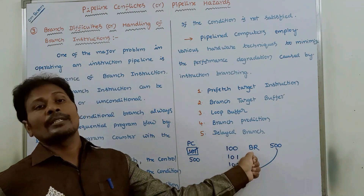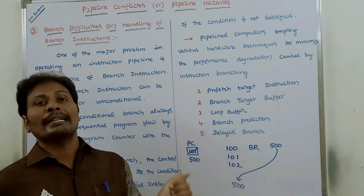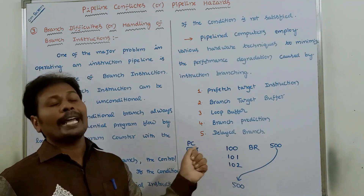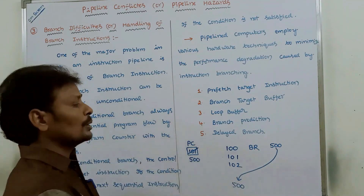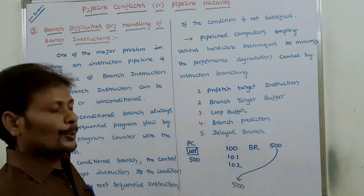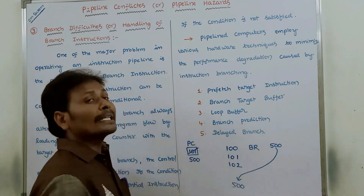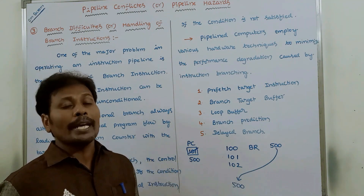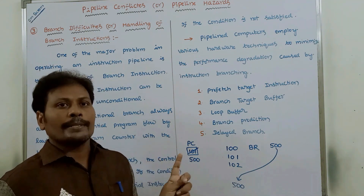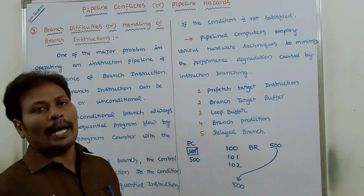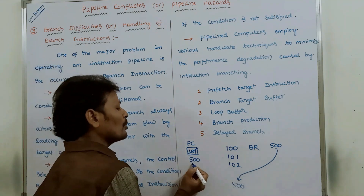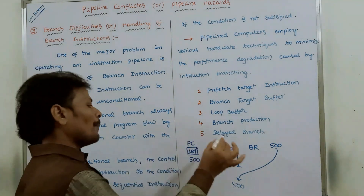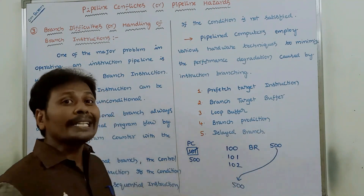This is called an unconditional branch — without any condition, the program control is transferred from the currently running instruction at address 100 to address 500. An unconditional branch instruction always alters the program flow by loading the program counter with the target address 500.